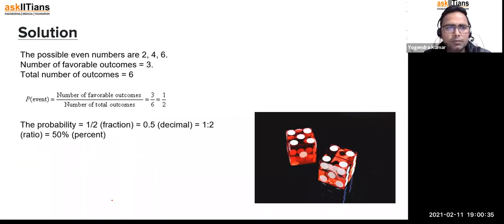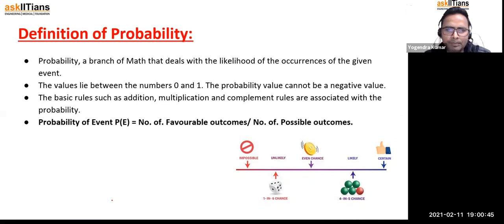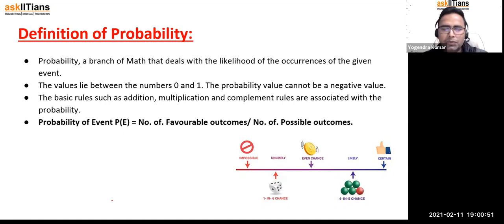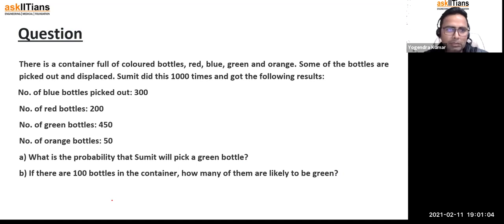The definition of probability: it is a branch of math that deals with the likelihood of the occurrence of a given event. The simple formula is favorable outcomes divided by total possible outcomes — this is what we need to remember. Now there is a container full of colored bottles — red, blue, green, and orange.